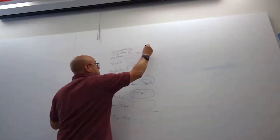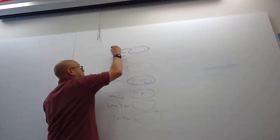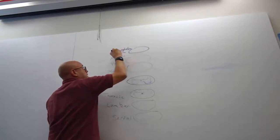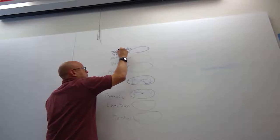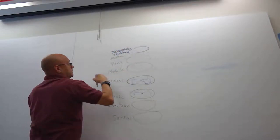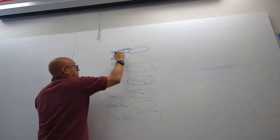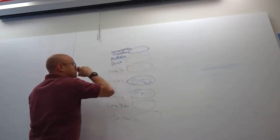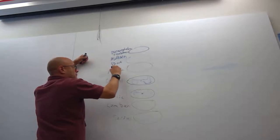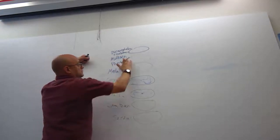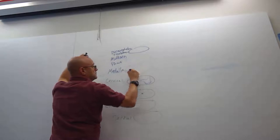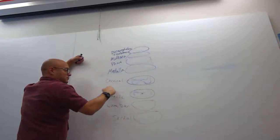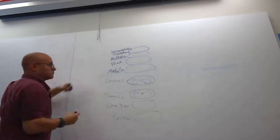If we draw these circles for each of the structures that we know exist in the brain — you have your thalamus, you have your midbrain, you have your pons, you have your medulla. Medulla, pons, midbrain, and you have your cervical, thoracic, lumbar, and sacral spinal cord segments.